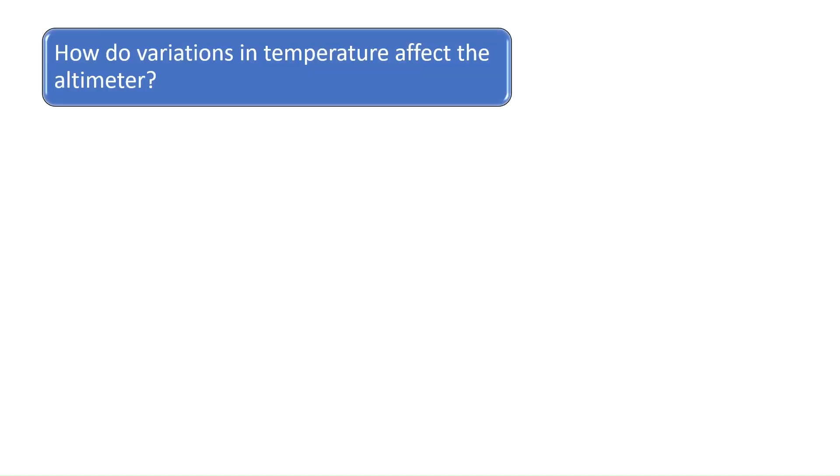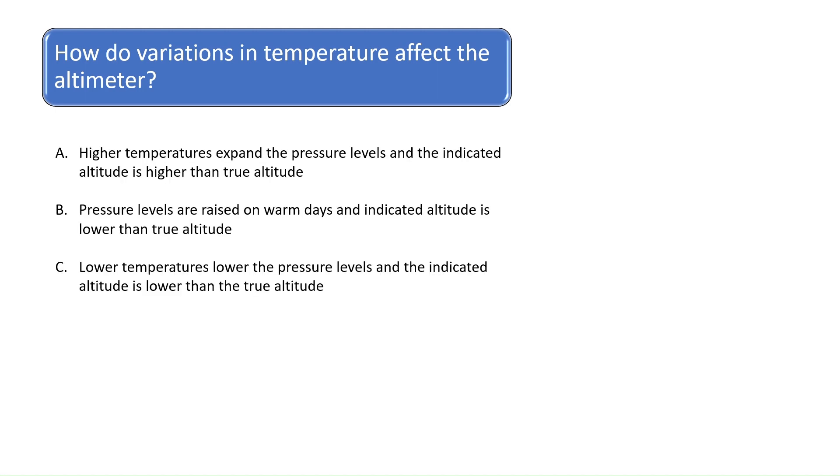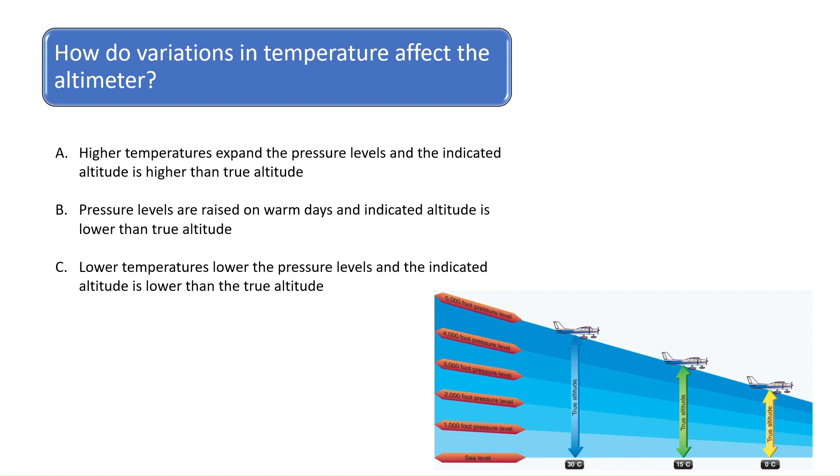Question 10. How do variations in temperature affect the altimeter? As you can see from the figure on the bottom right, since hot air is not as dense as cold air, pressure levels are raised on warm days and the indicated altitude will be lower than the actual altitude.